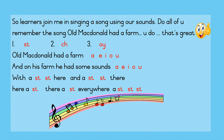One, two, three. Old Macdonald had a farm, A-E-I-O-U. And on his farm he had some sounds, A-E-I-O-U. With a cha-cha-chur here and a cha-cha-chur there, here a cha, there a cha, everywhere a cha-cha-cha. Old Macdonald had a farm, A-E-I-O-U. And on his farm he had some sounds, A-E-I-O-U. With the oi oi here and oi oi there, here oi, there oi, everywhere oi oi oi.